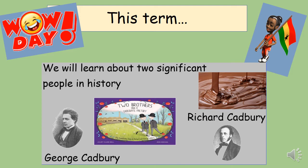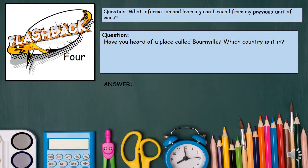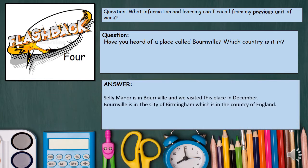We will learn about two significant people in history. Two Brothers and a Chocolate Factory is a book that we will use to support our learning. The two brothers are George Cadbury and Richard Cadbury. We visited a place called Bourneville — can the children remember Bourneville? What country is it in? Selly Manor is in Bourneville, and we visited this place in December. Bourneville is in the city of Birmingham, which is in the country of England.